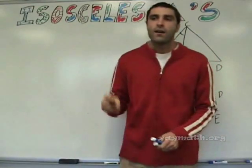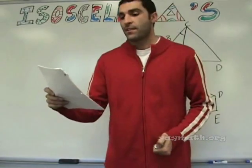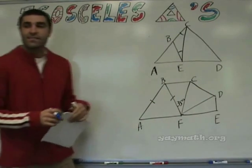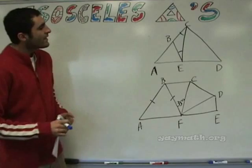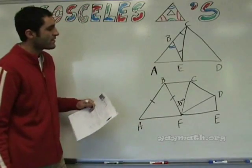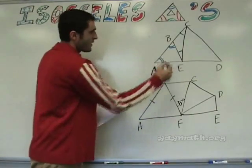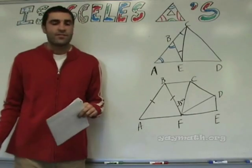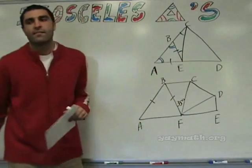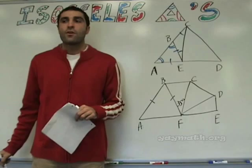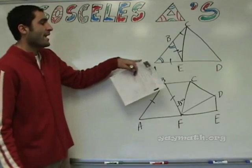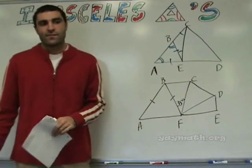Volunteer to read number three. If angle EBA is congruent to angle EAB, name two congruent segments. Segment BE and segment AB. Yes and yes. Could you say segment AE and BA? No, because BA is not opposite — it's not on an opposite angle. Good question.